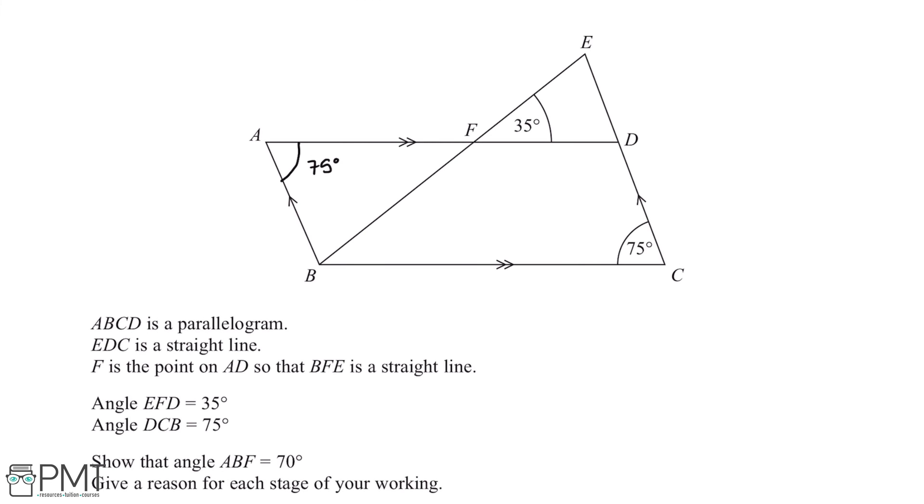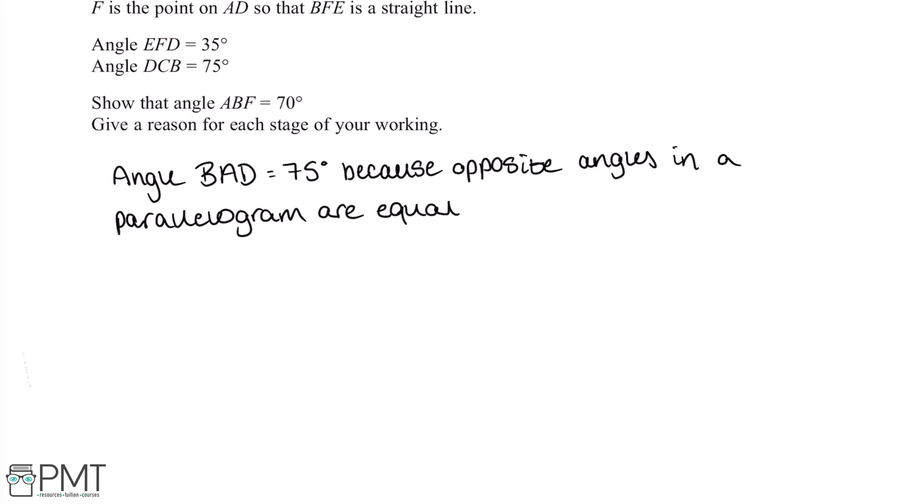Now if we take a look back at this diagram, we can also see that this angle here, AFB, will also be 35 degrees because vertically opposite angles are equal. So we can also fill this in. Again, we can write this in the space below so it's clear where we've got our answer from. So we can write that angle AFB is 35 degrees because vertically opposite angles are equal.